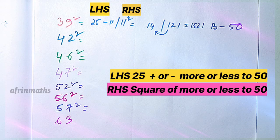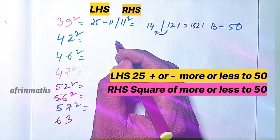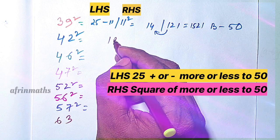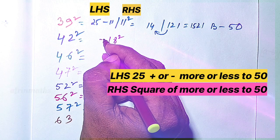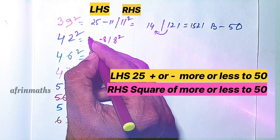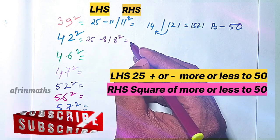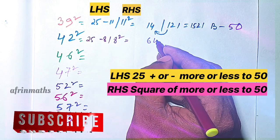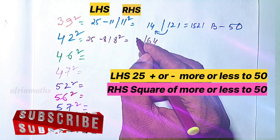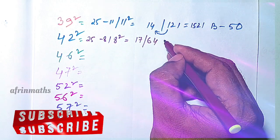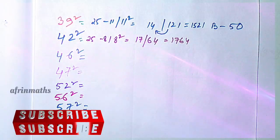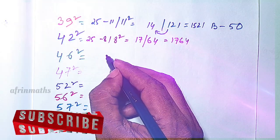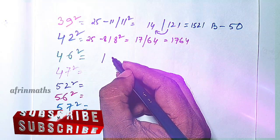Now the square of 42. It is 8 away from 50, so we subtract 8 from 25, giving 17. 8 squared is 64. On the left-hand side we have 17, so the answer is 1764, which is the square of 42.